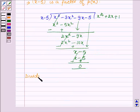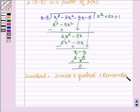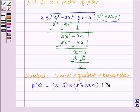Since dividend is equal to divisor times quotient plus remainder, and our dividend is P(x), divisor is x minus 5, on dividing P(x) by x minus 5 we get the quotient as x square plus 2x plus 1 and the remainder is 0.